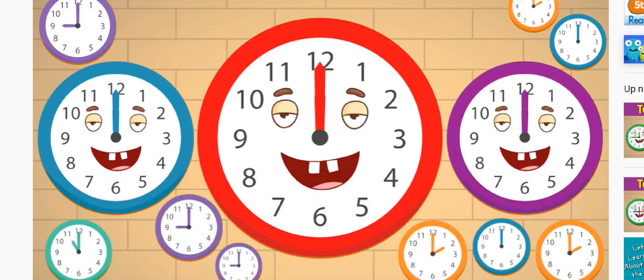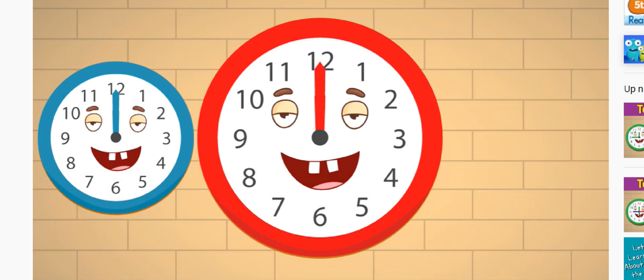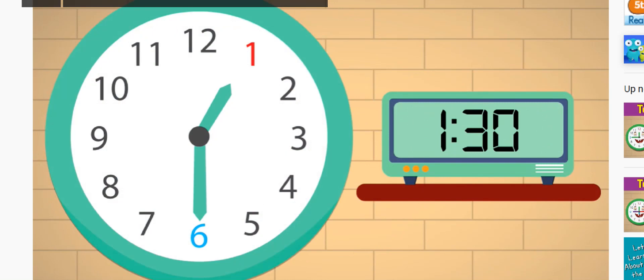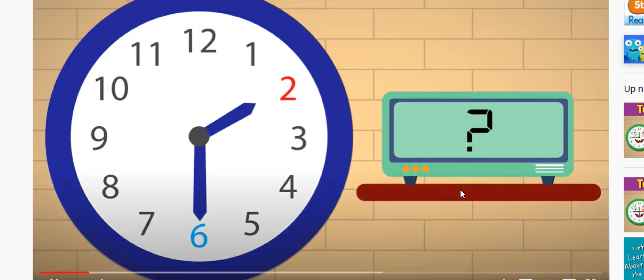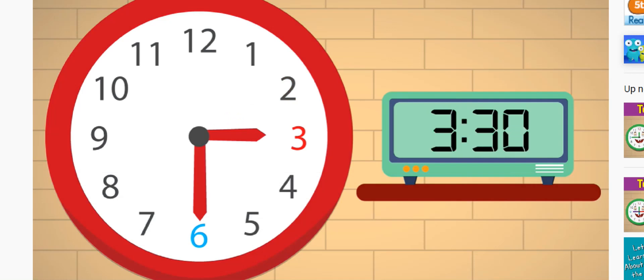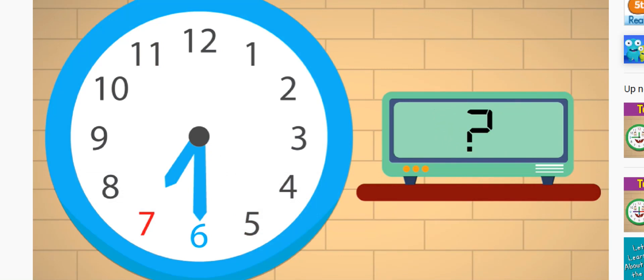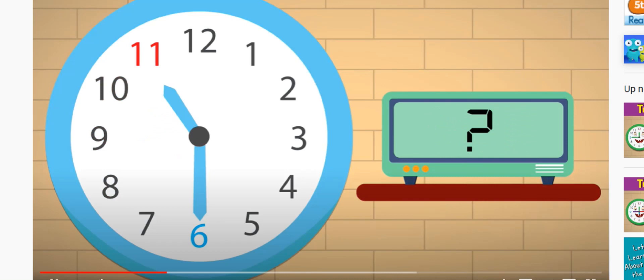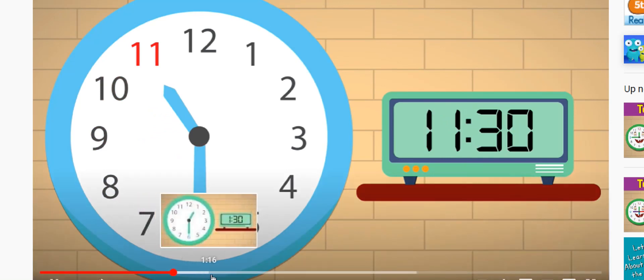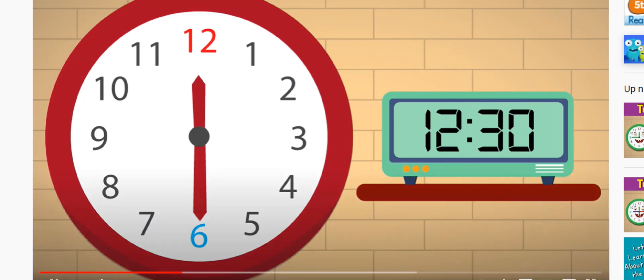Hey everybody, are you ready to learn to tell time? Here we go. What time is it? It's one thirty. What time is it? It's two thirty. What time is it? It's three thirty. What time is it? It's four thirty. What time is it? It's five thirty. What time is it? It's six thirty. What time is it? It's seven thirty. What time is it? It's eight thirty. What time is it? It's nine thirty. What time is it? It's ten thirty. What time is it? It's eleven thirty. What time is it? It's twelve thirty. Good job everybody.